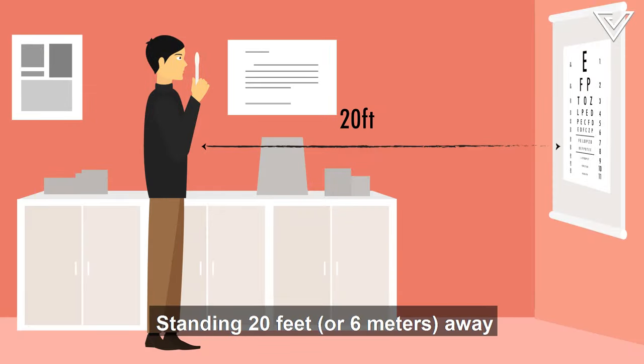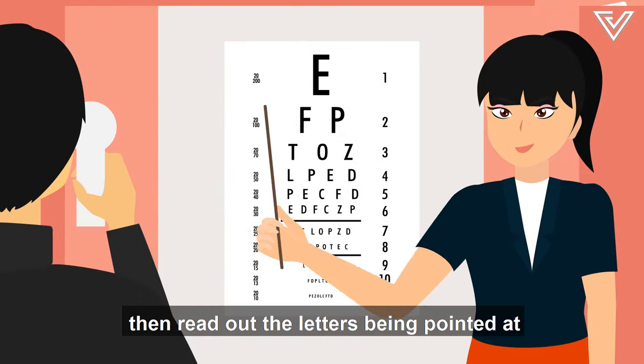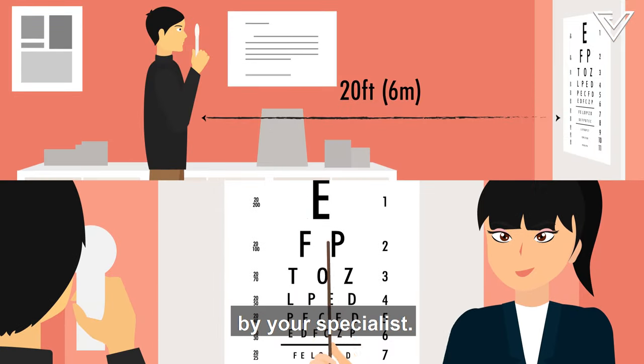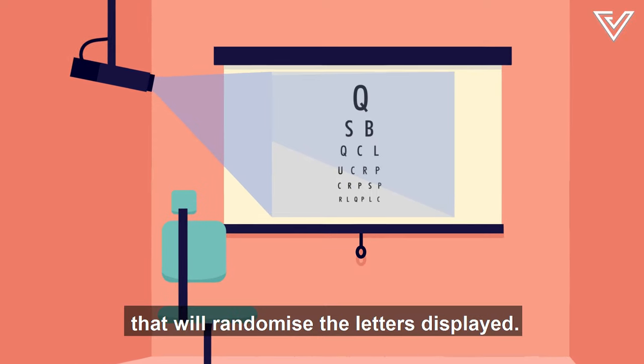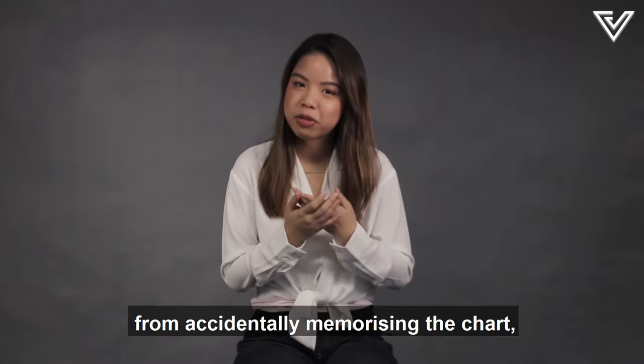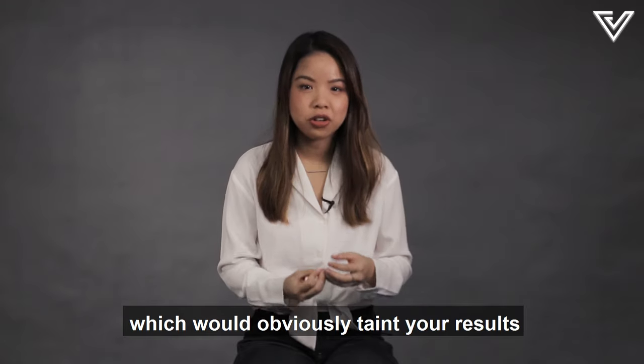Standing 20 feet or 6 meters away, you will cover one eye, then read out the letters being pointed at by your specialist. Nowadays though, there are digital Snellen charts that will randomize the letters displayed. This is to prevent you from accidentally memorizing the chart, which would obviously taint your results.